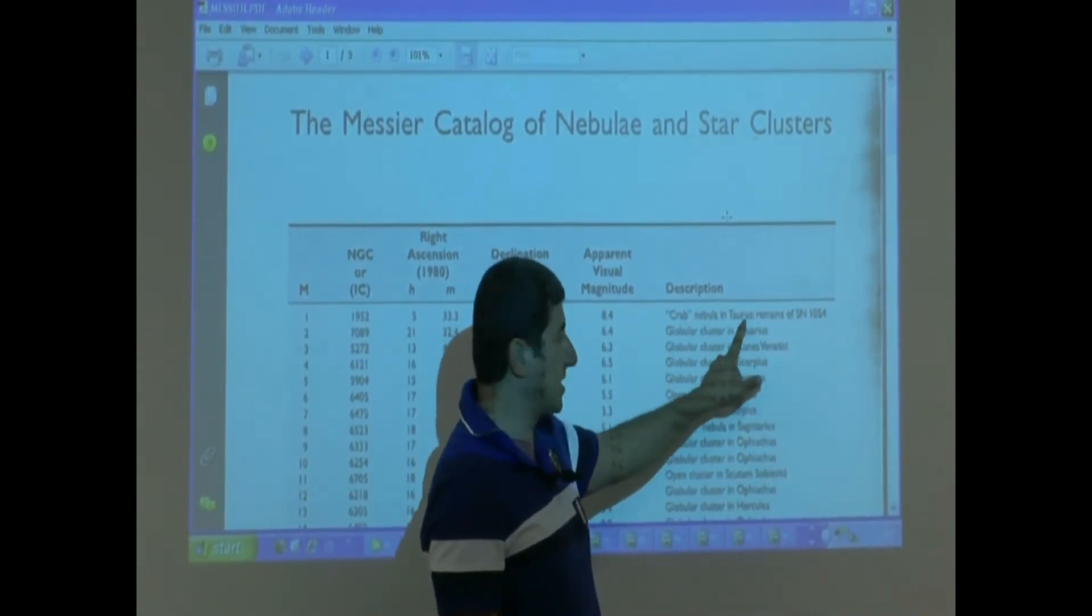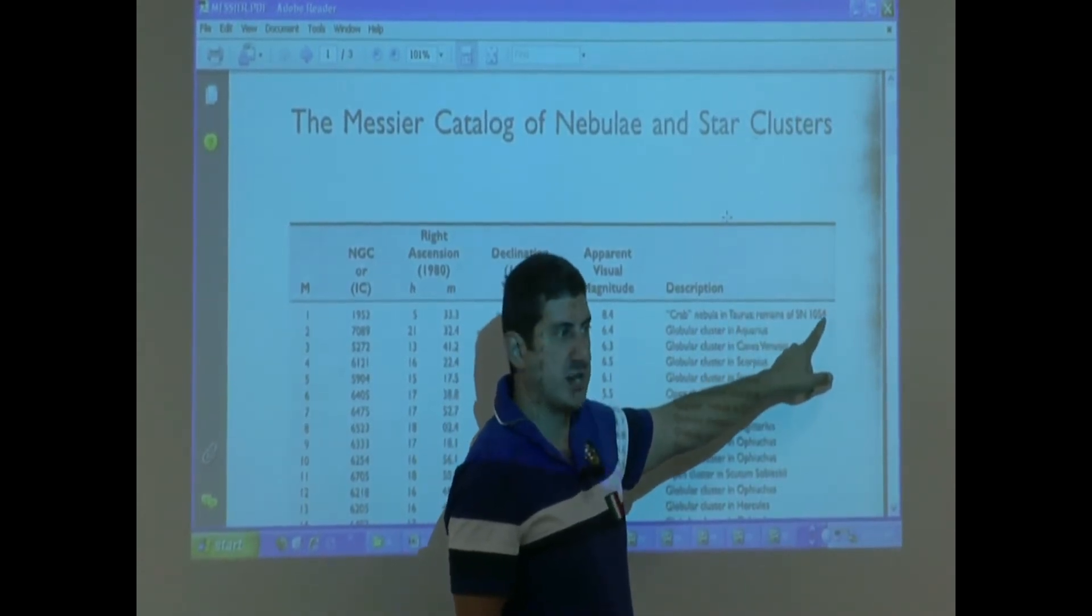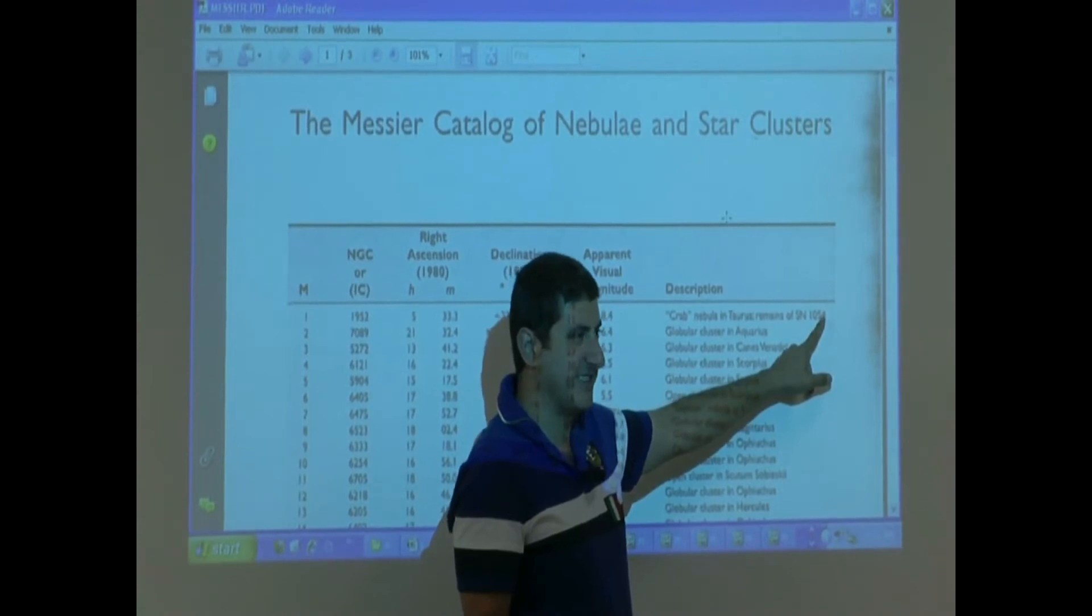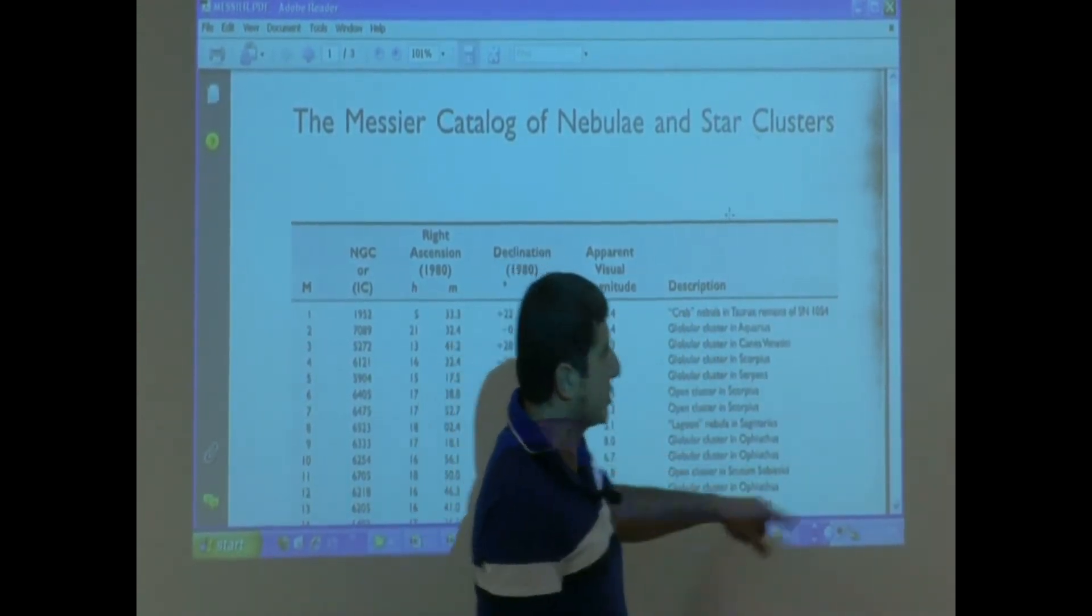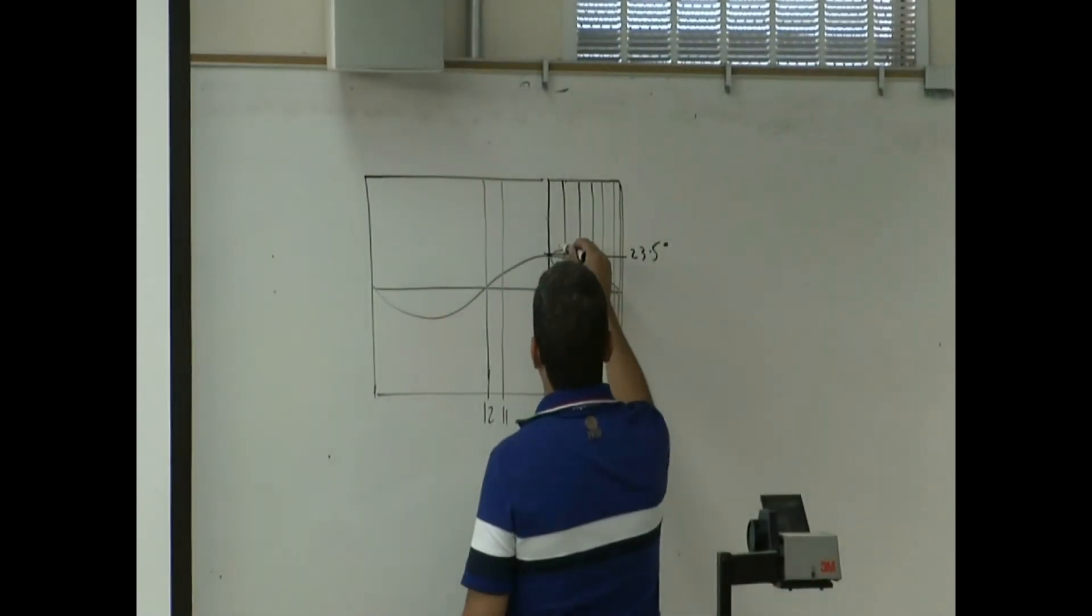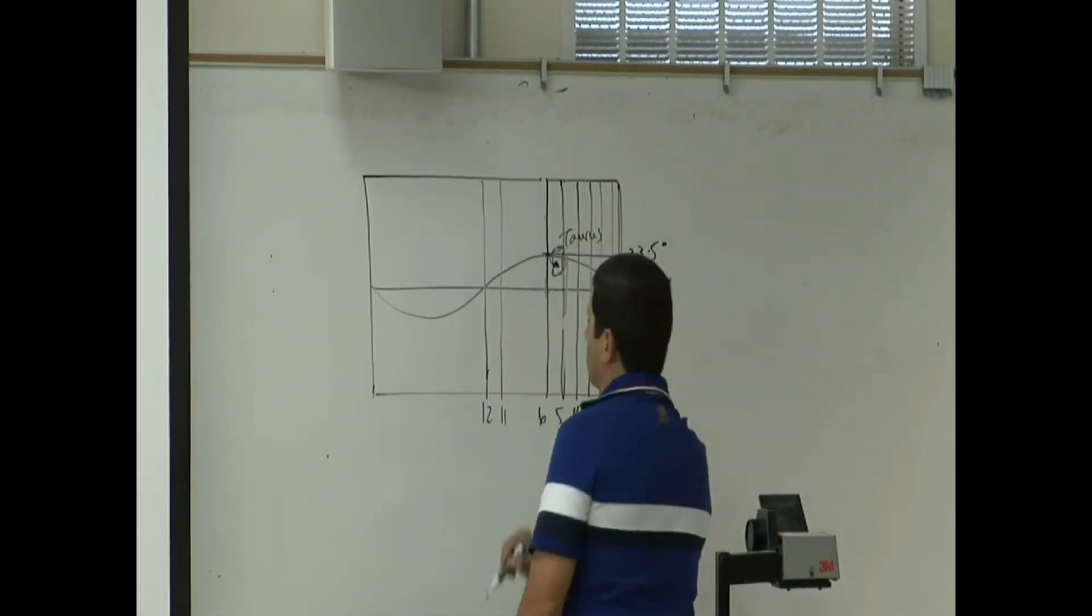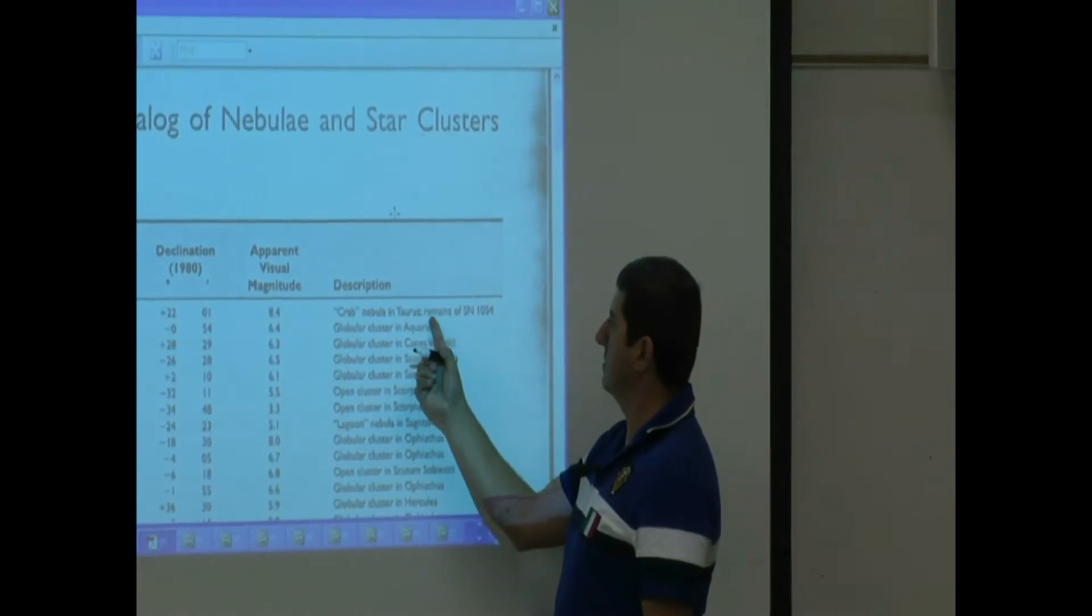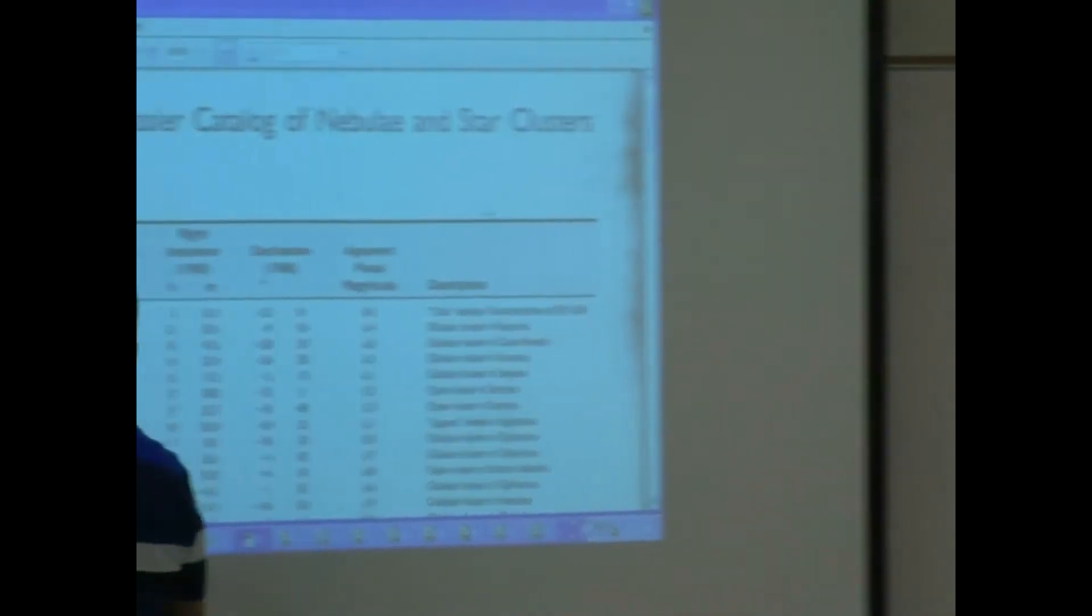What is the description of this object? Crab Nebula in the constellation Taurus. Remains of the supernova remnant that the Chinese observed in 1054. That's the Crab Nebula. So if you look in that location of the constellation chart, you should see the constellation Taurus. And inside of there, Crab Nebula remains of the supernova remnant.